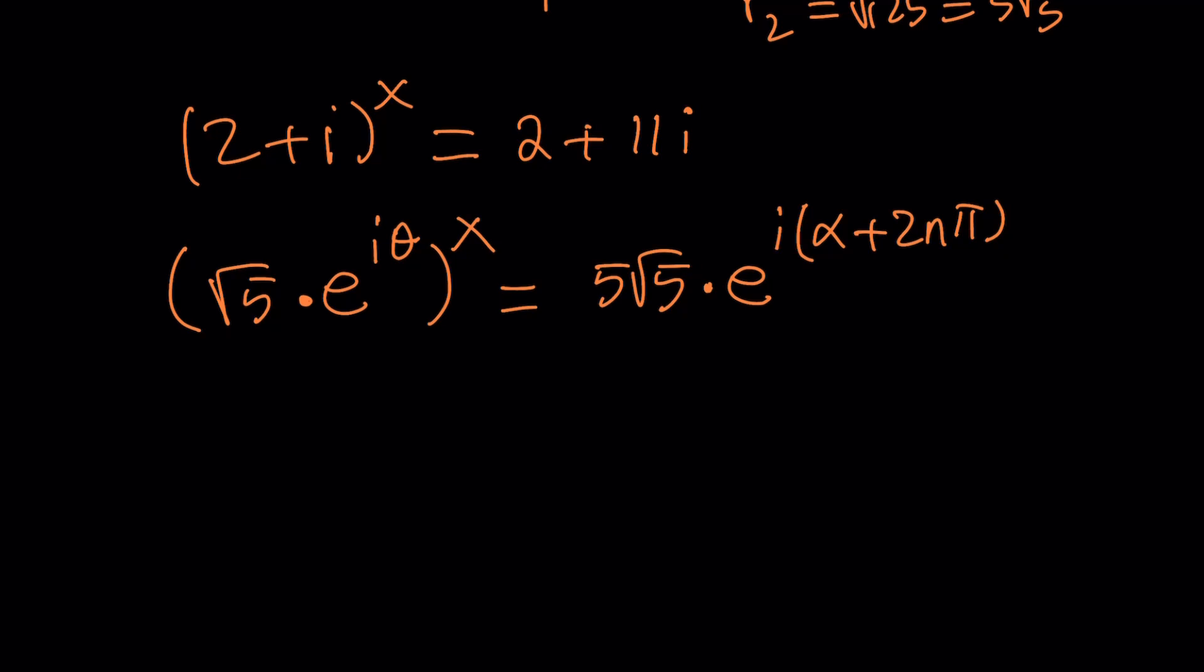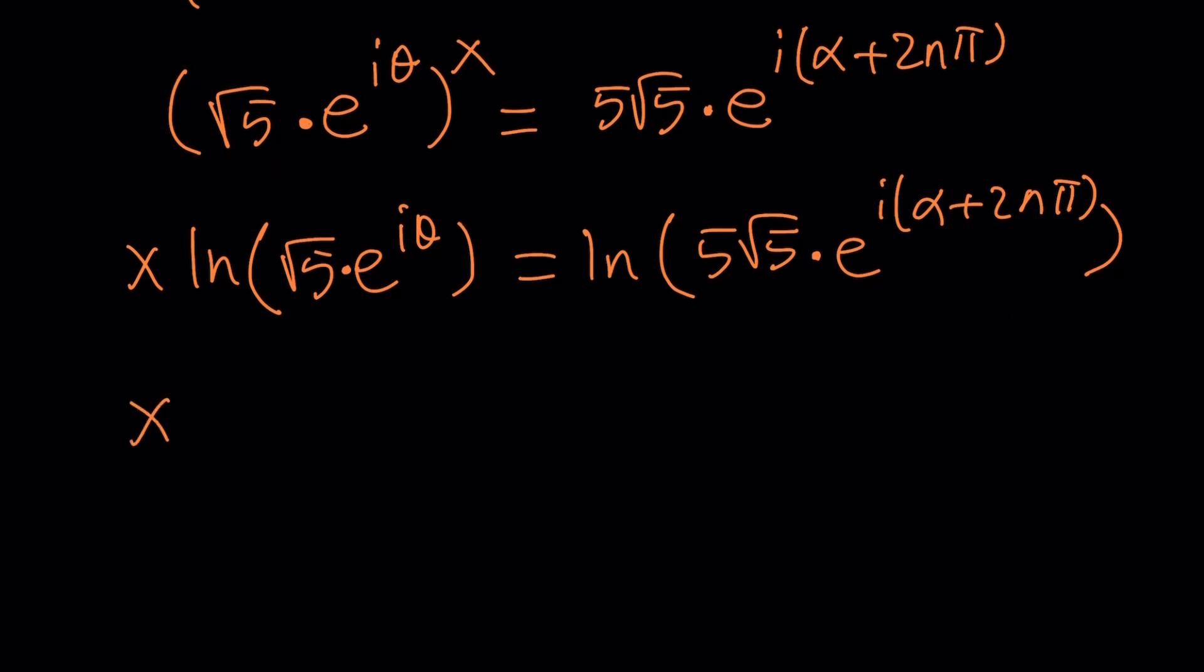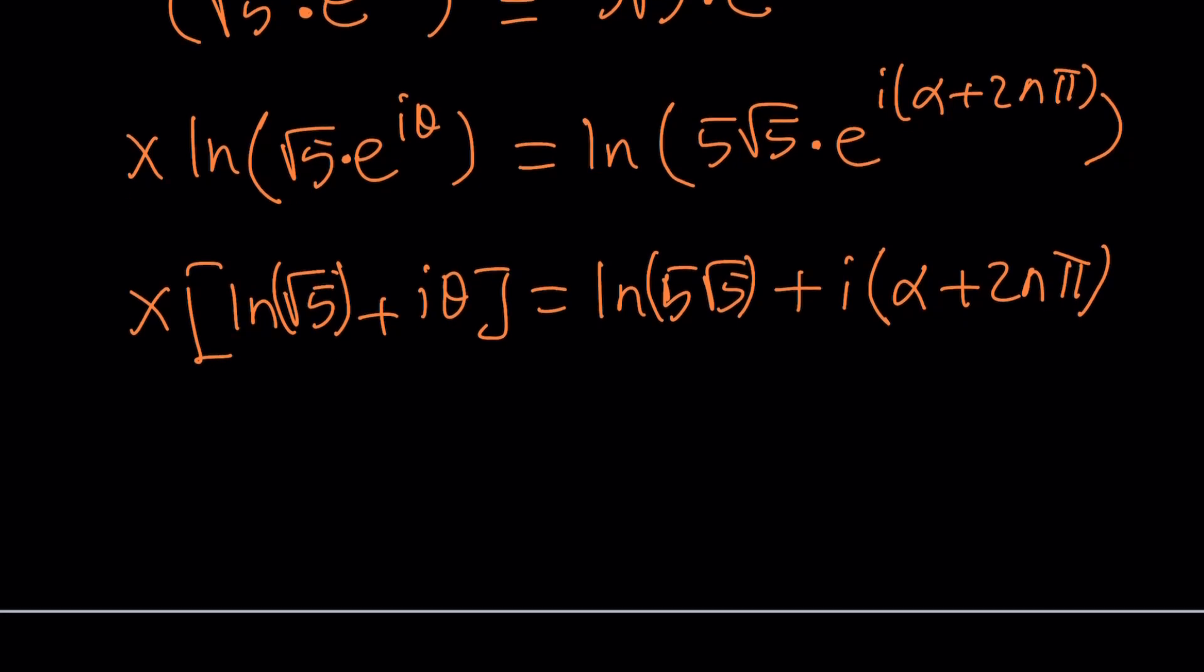So when you do natural log both sides, you're going to get the following, x ln this. And what we can do is we can actually write this as a sum. But let's go ahead and just ln both sides first and see what that looks like. And now, we can go ahead and apply ln function to a product and ln of a product is basically the sum of two ln's. With the x on the outside, I'm just going to keep it like this and write this as ln root 5 plus ln e to the i theta is just going to be i theta. And this is going to be ln 5 root 5. And I could probably write these in parentheses both. And then plus ln e to e is 1, so it's just going to be i times alpha plus 2n pi. Alrighty?